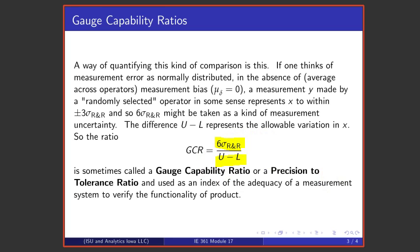That ratio is sometimes called a Gauge Capability Ratio or Precision to Tolerance Ratio, with the numerator representing precision of measurement and the denominator representing engineering tolerance or allowance.